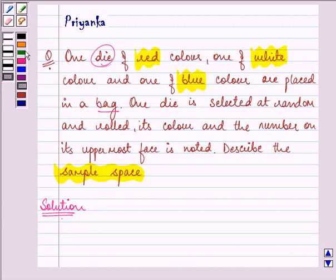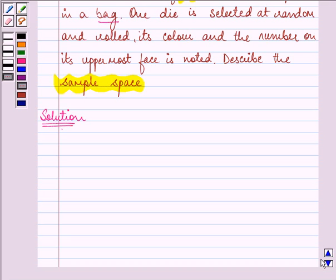Let us denote the red die as R, the white die as W, and the blue die as B.